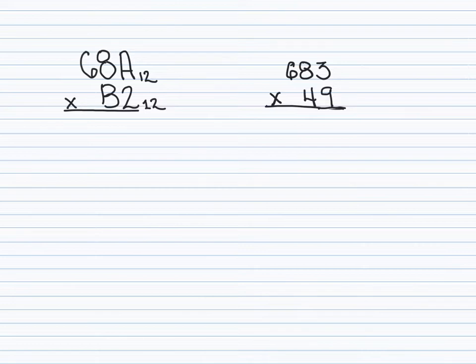Okay, so if I was looking at this on the right hand side here, base 10 multiplication problem, our regular number system, 683 times 49, think about what I would do first. I would start by passing out the number in the ones column, and I would multiply 9 times 3. And if I multiplied 9 times 3, I would get 27.